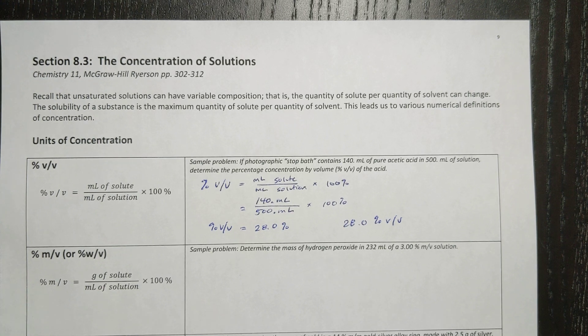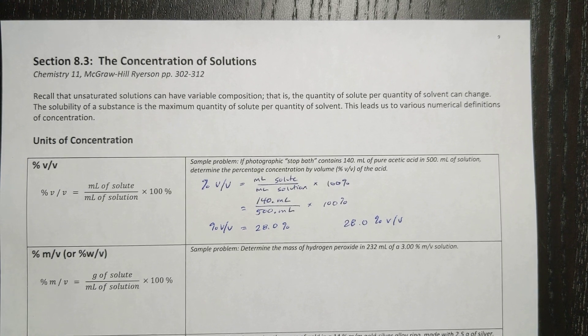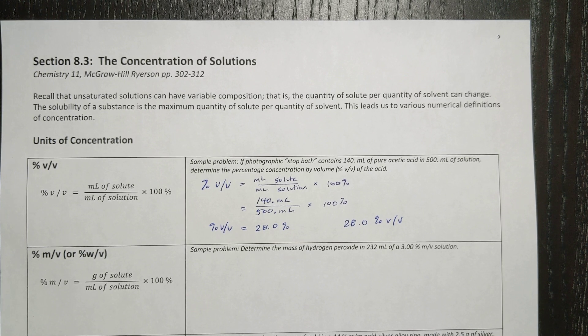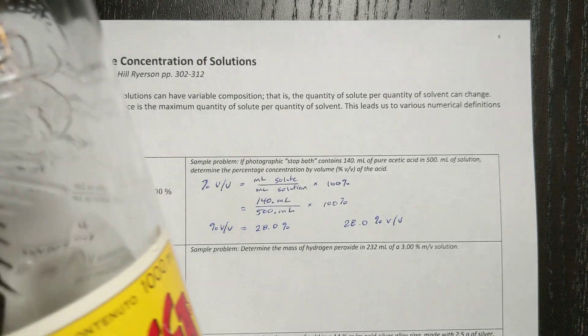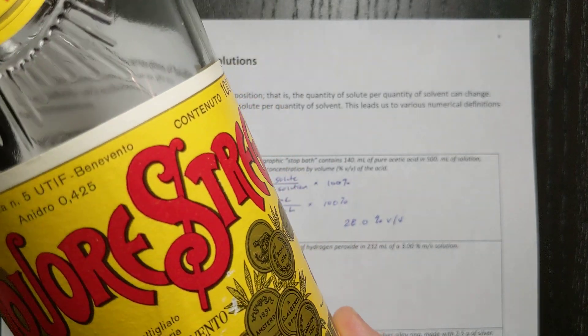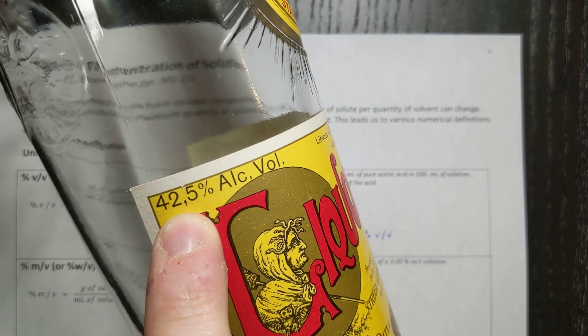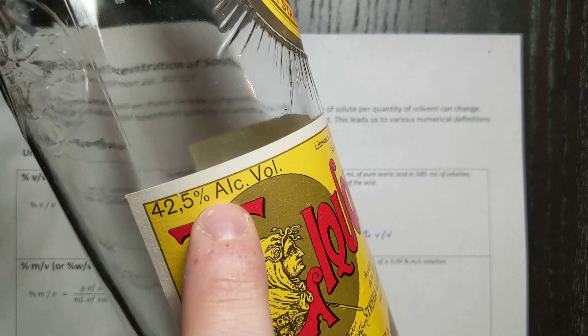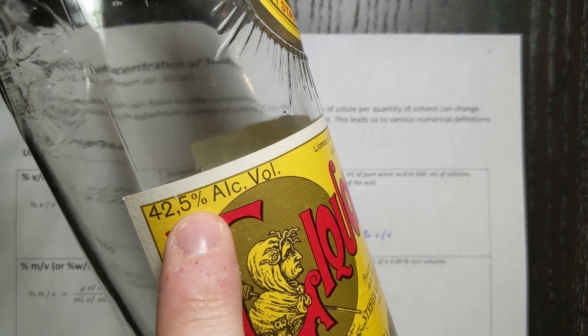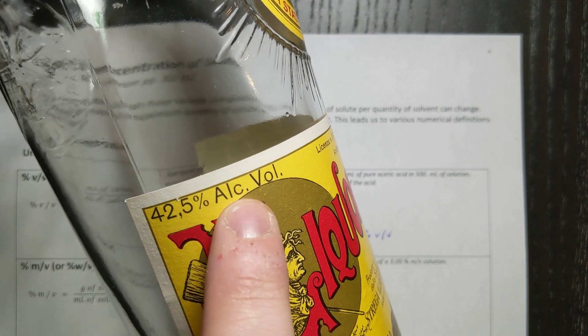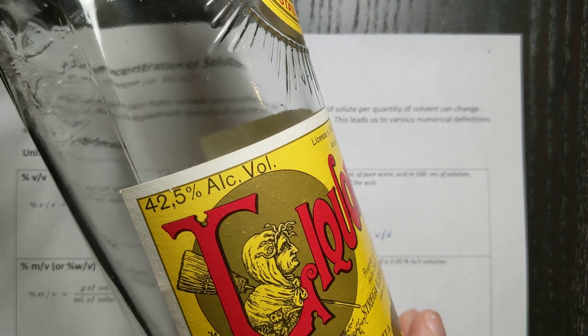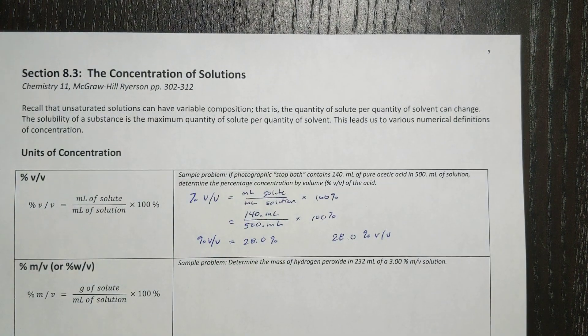You may be wondering where we might encounter this, a percent volume per volume type of concentration. And it's so common. We actually encounter it in alcoholic drinks such as beers, wines, and liqueurs. So this is a very well-known Italian liqueur. It's called Liquore Strega. And as you can see here, it's given 42, and it says a comma because it's an Italian bottle. So they don't use decimals, they use commas. A percent alcohol volume. So 42.5 milliliters is alcohol, so ethanol, in 100 milliliters of the solution.